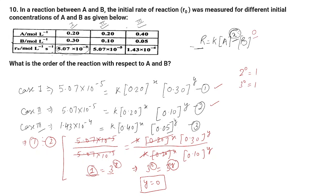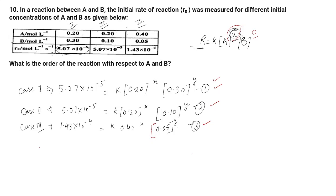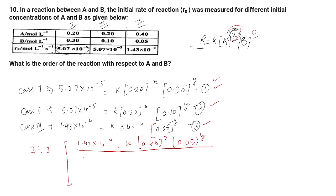To find x, we divide equation 3 by equation 1. Equation 3: 1.43 × 10⁻⁴ = k × (0.40)^x × (0.05)^y. Divided by equation 1: 5.07 × 10⁻⁵ = k × (0.20)^x × (0.30)^y.